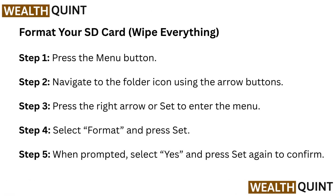Format your SD card to wipe everything. Step 1: Press the menu button. Step 2: Navigate to the folder icon using the arrow buttons. Step 3: Press the right arrow or set to enter the menu. Step 4: Select format and press set. Step 5: When prompted, select yes and press set again to confirm.